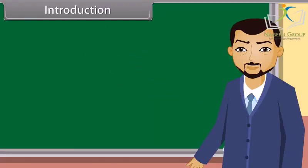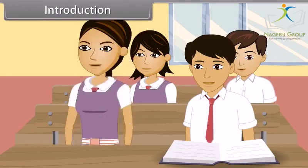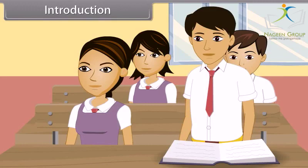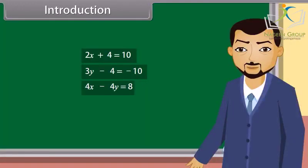Students, look at these equations. What type of equations are these? These are linear equations. And what type of equation is this? This is also a linear equation. This is also a linear equation, but it has two variables. So it's a linear equation in two variables. Today we will learn about the pair of linear equations in two variables.